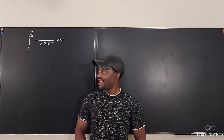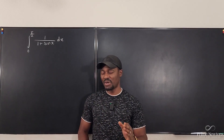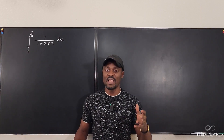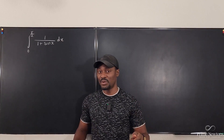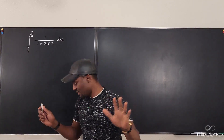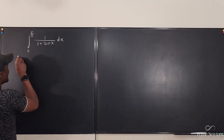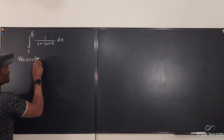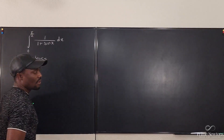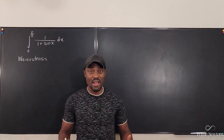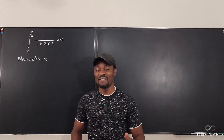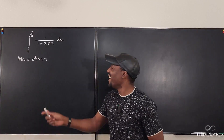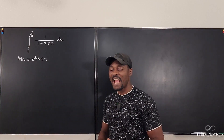Welcome to another video. I'm going to take this definite integral but I'm going to use a method that you don't often see used, and it's called the Weierstrass substitution. It's a German name — you say it 'Weierstrass' or just 'Weierstrass.' That's how you say it.